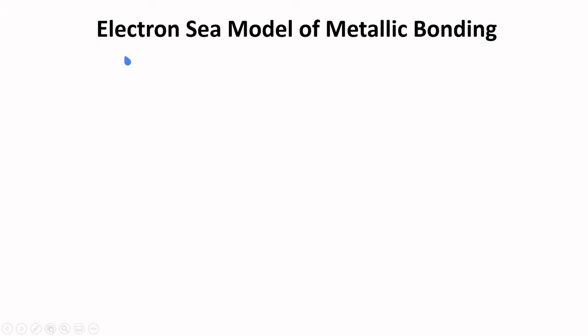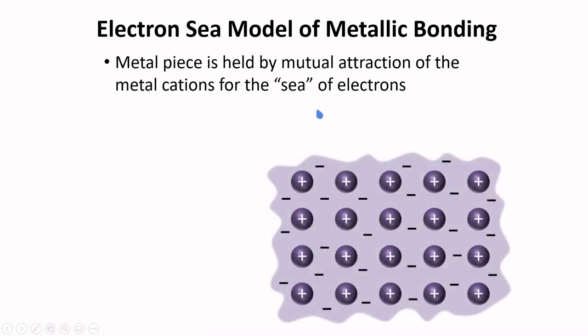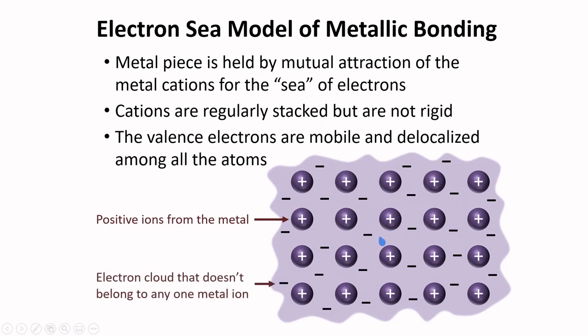The simplest model that can account for metallic bonding is called the Electron-Sea model. In this model, a metal piece is held by mutual attraction of the metal cation for the sea of electrons. Cations are regularly stacked but are not rigid. The valence electrons are mobile and they are delocalized among all the atoms.